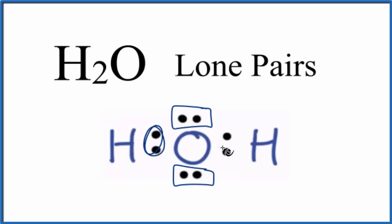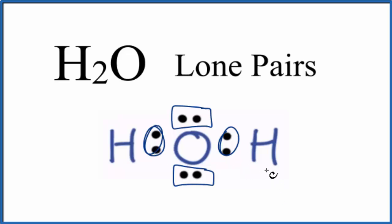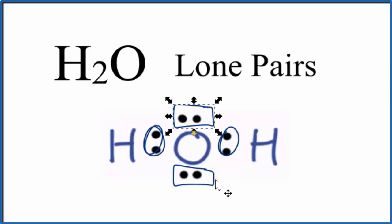If we look at these right here, they're between the oxygen and the hydrogen atoms. That means they're involved in a chemical bond, so these are bonding pairs of electrons. But we wanted to know how many lone pairs we have — we have one, two lone pairs for water.